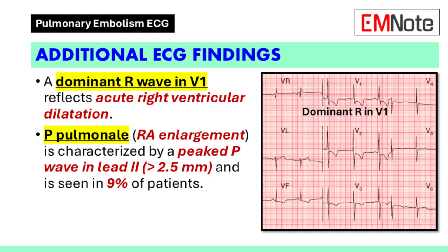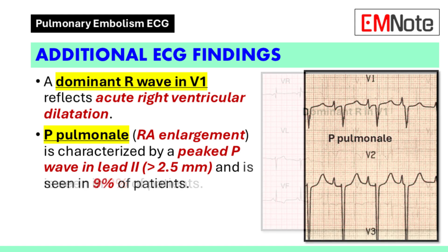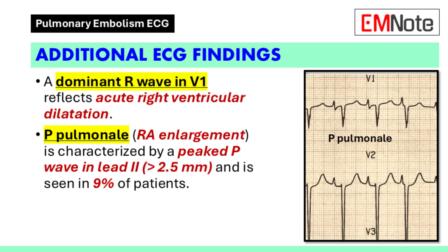A dominant R wave in V1, reflecting acute right ventricular dilatation, can also be present. Right atrial enlargement is characterized by P-pulmonale, which is a peaked P-wave in lead 2 that exceeds 2.5 mm in height.